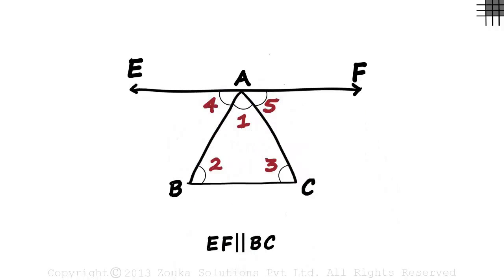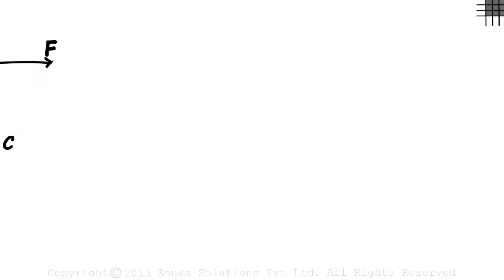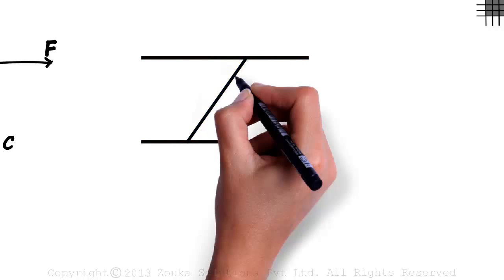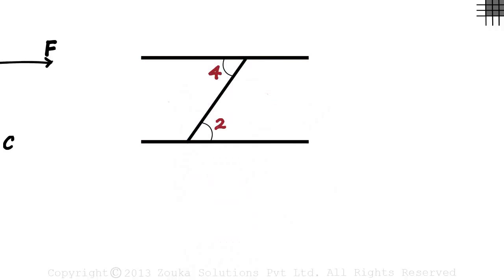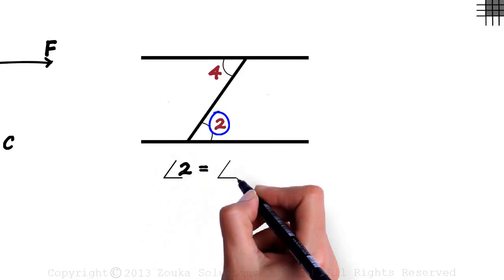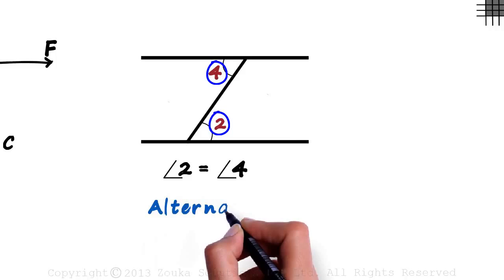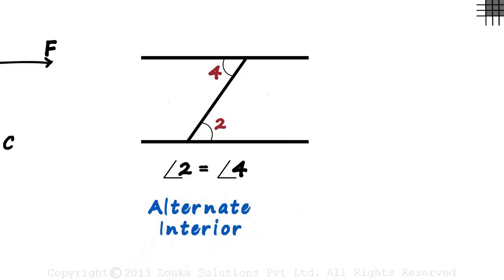Before we move forward, let us understand a new concept. Assume these are two parallel lines and there is a transversal that cuts those lines. Let this be angle 4 and this be angle 2. In such a case, angle 2 will always equal angle 4. These are alternate interior angles. Remember, the transversal has to cut two parallel lines.